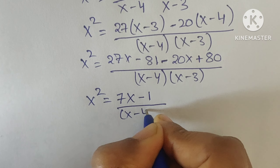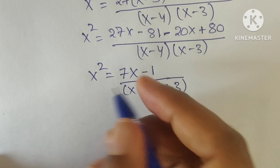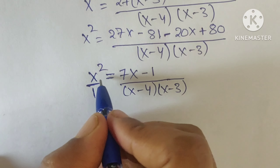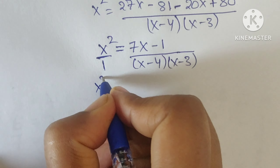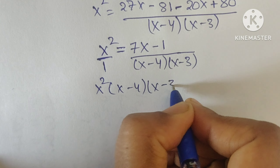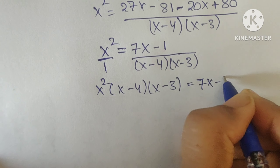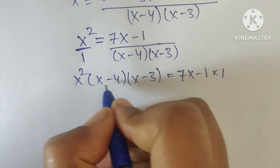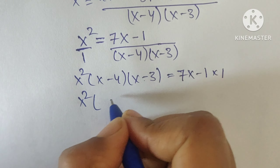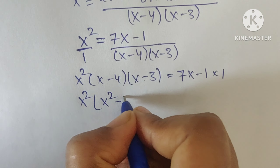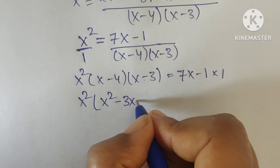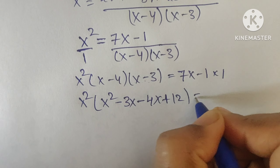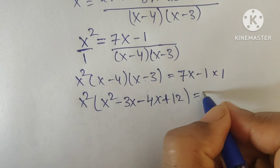So x squared equals (7x minus 1) divided by (x minus 4)(x minus 3). Now we do cross multiplication, so x squared times (x minus 4)(x minus 3) equals 7x minus 1. Multiplying out the left side: x times x gives x squared, x times minus 3 gives minus 3x, minus 4x, and 4 times 3 gives 12 — the minus-minus becomes positive, so plus 12.